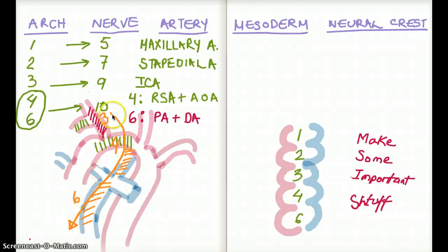Well, you can use this pattern of thinking that okay, common carotid comes from brachial arch 3, internal carotid is derived from the common carotid, so the right internal common carotid must also come from brachial arch 3.